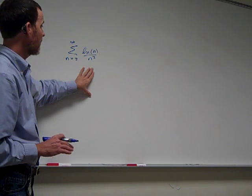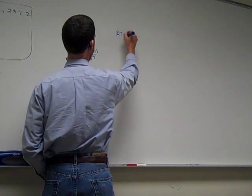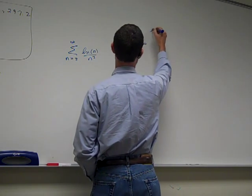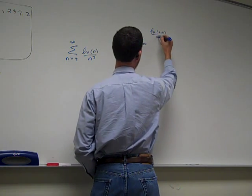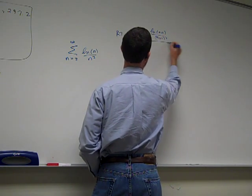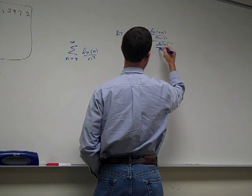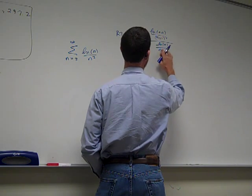Ratio? We could try ratio but I think it's going to fail, but let's go ahead and try it. That's a nice thing to start. Limit as n goes to infinity of natural log of n plus 1, right? I put n plus 1 in, over n plus 1 cubed, all over natural log of n over n cubed.